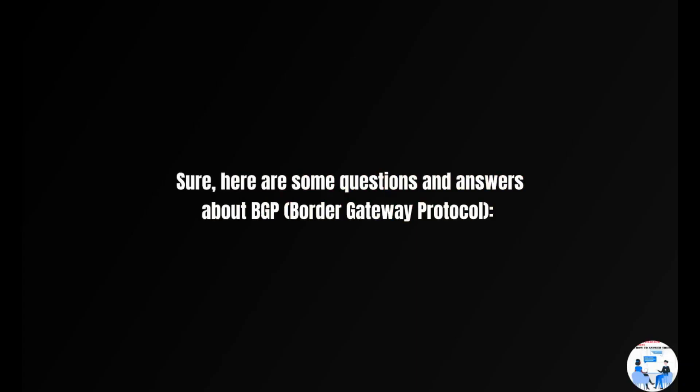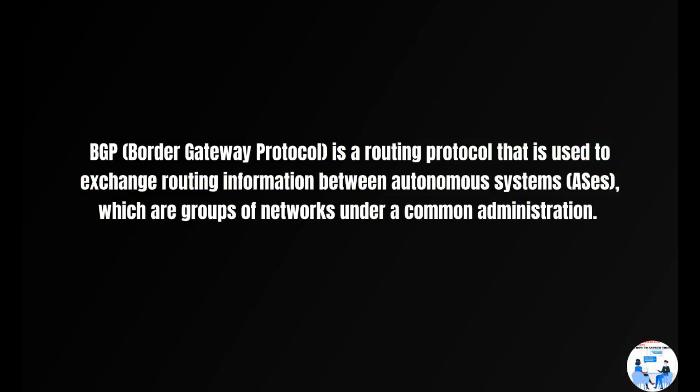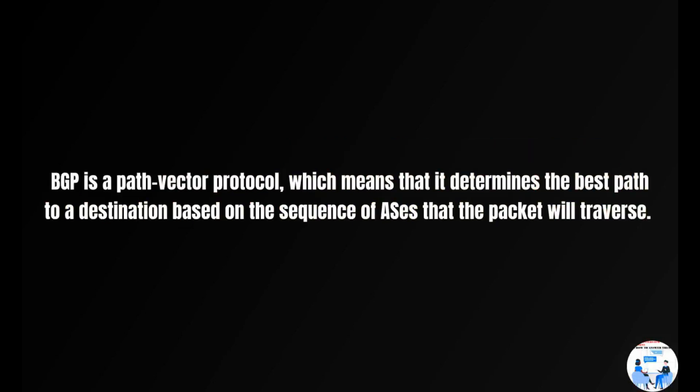What is BGP? Border Gateway Protocol is a routing protocol that is used to exchange routing information between autonomous systems, or ASes, which are groups of networks under a common administration. BGP is a path vector protocol, which means that it determines the best path to a destination based on the sequence of ASes that the packet will traverse.